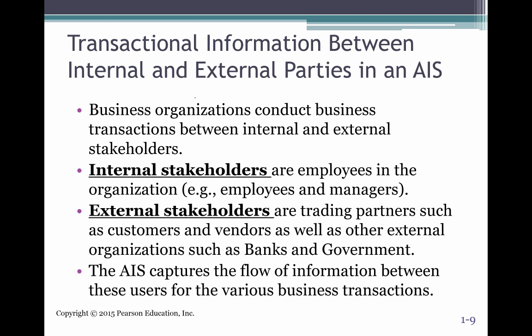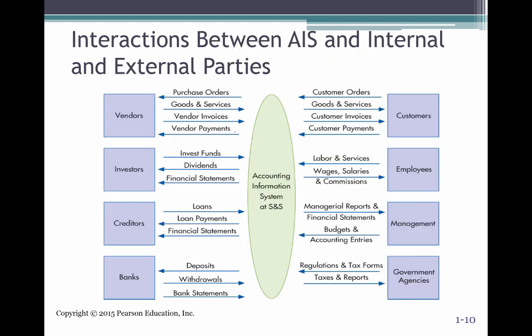These transactional data happen between internal and external parties. You conduct business within your organization and without. Within the organization, stakeholders are employees and managers. Outside, it could be trading partners, vendors, customers, banks, governmental organizations, and regulatory bodies. The AIS system gives you this flow of information — it allows you to capture that information for various transactions, synthesize it, summarize it, and then share it with your stakeholders, both internal and external.